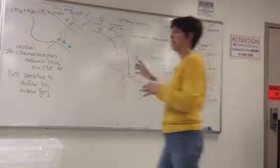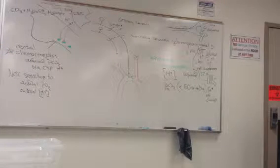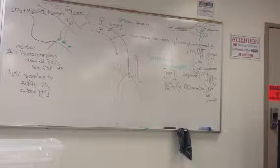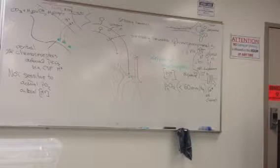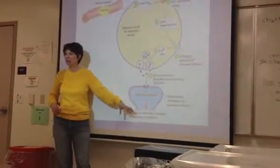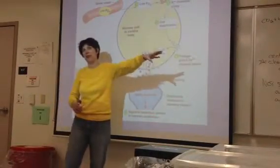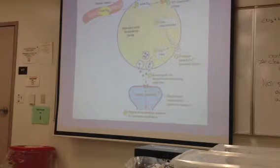So the glomus cell is just the receptor. It makes a generator potential. And it releases the chemical that then binds to the sensory neuron. And that would be the sensory neuron of the vagus or the glossopharyngeal nerve. And that's how we get information from our peripheral chemoreceptor to the respiratory groups.